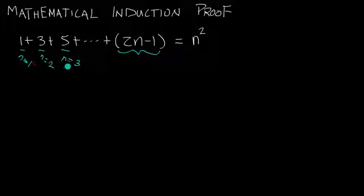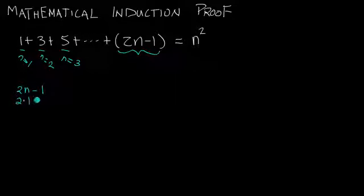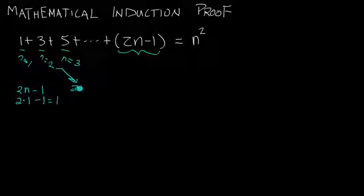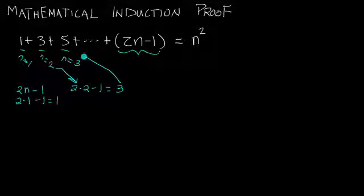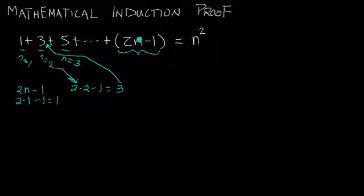So how exactly is 1 representative of the 2n minus 1? Since n equals 1, we have 2 times 1 minus 1, which equals 1. For the n equals 2 term, we have 2 times 2 minus 1, which equals 3. And when n equals 3, we get the value 5. That's what it means to go up to 2n minus 1 — it depends on the nth term, how many terms we're going to — and all of those added together equal n squared.